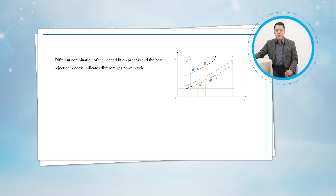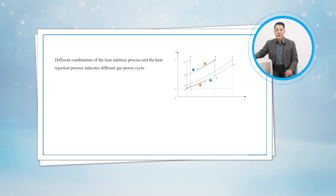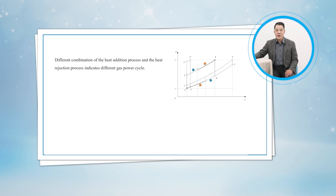Based on the cycle 1-2-3-4-1, we can find 8 cycles with different combinations of the heat addition and heat rejection processes.